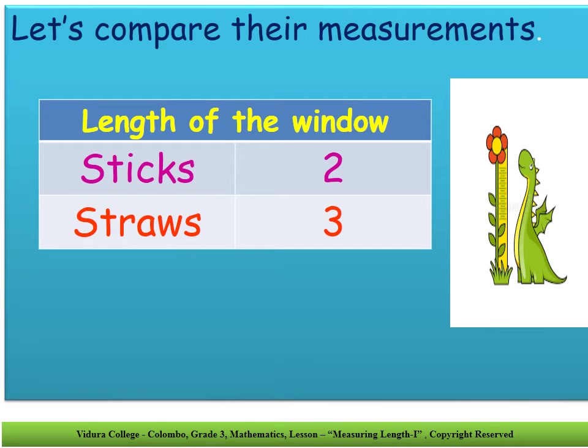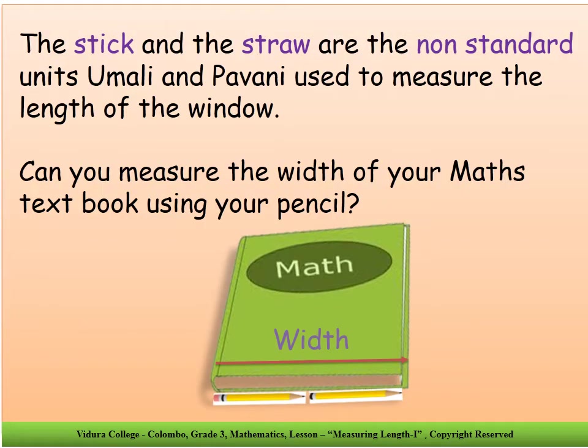Shall we compare their measurements? According to Umali, the length of the window is two sticks. According to Pavani, the length of the window is three straws. The stick and the straw are the non-standard units Umali and Pavani used to measure the length of the window.